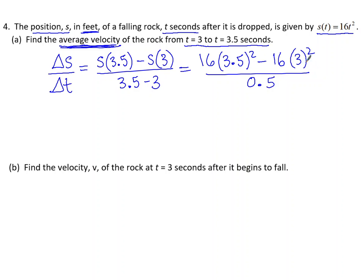We can compute this with a calculator, but I'd like to do some simplifying to make it easier. I see a common factor of 16, so I'm going to factor it out, and I'm left with 3.5 squared minus 3 squared over 0.5.